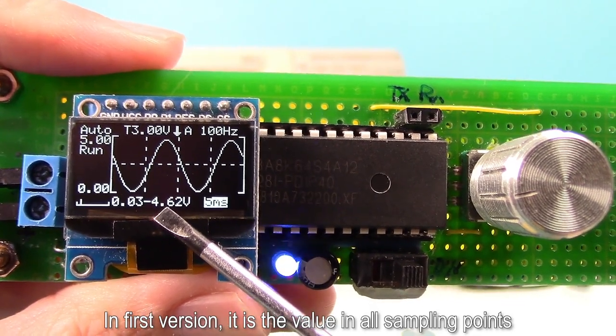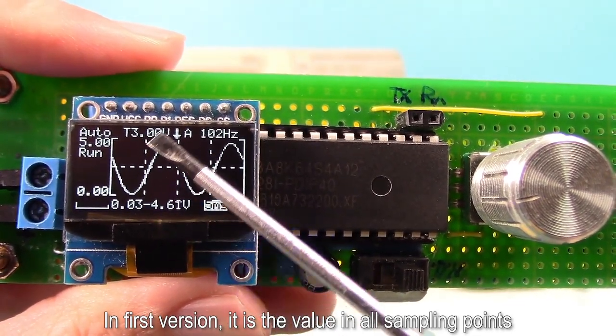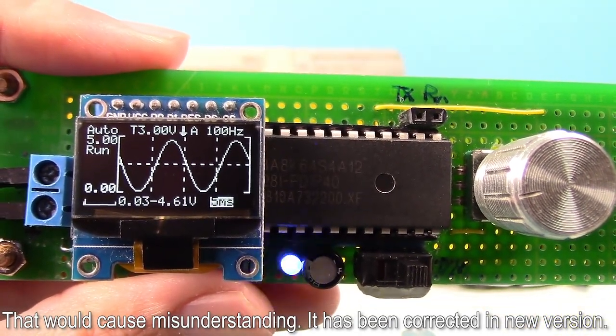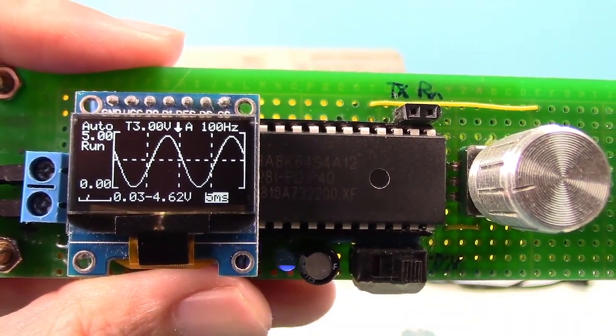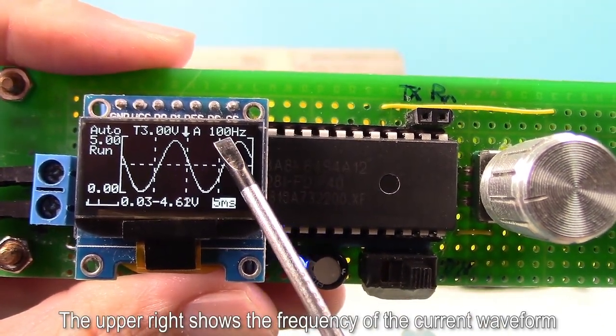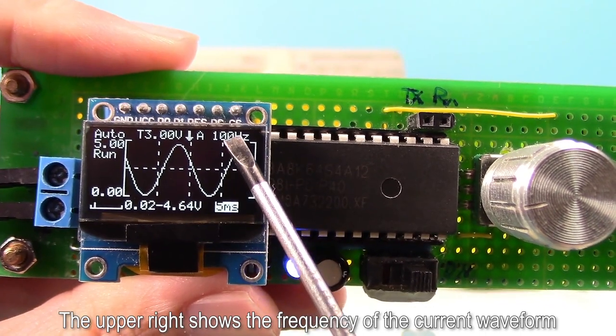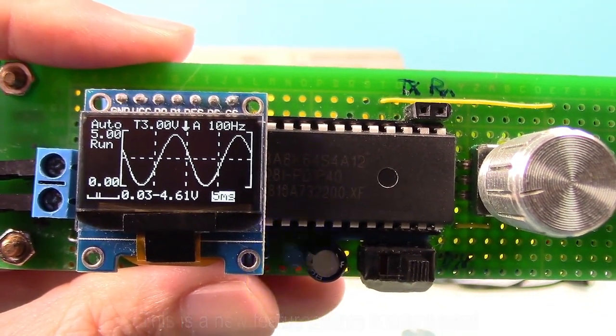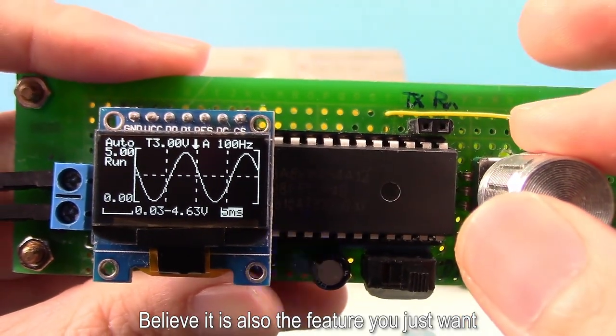In first version, it was a value in all sampling points. That would cause misunderstanding. It has been corrected in new version. Beside it is seconds per division. The upper right shows the frequency of current waveform. This is a new feature which is very useful. Believe it is also the feature you just want.